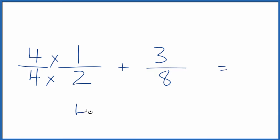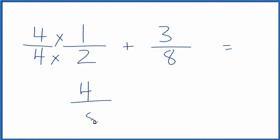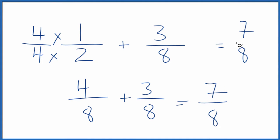But now I have four times one is four. Four times two is eight. And then I'll add the three-eighths there. And that gives me four plus three is seven over eight. Seven-eighths. So one-half plus three-eighths, that's seven-eighths.